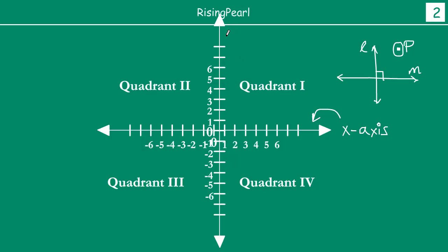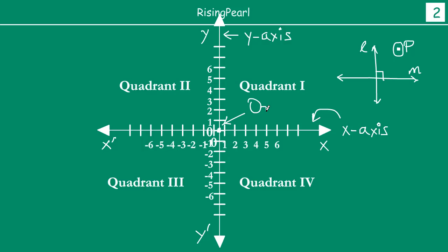And the other one we call the Y axis. Now, the X axis we also write as X X-dash — that is our naming convention. And the vertical axis we write as Y Y-dash. And where the X axis and Y axis intersect, this is our point of intersection. This point we call the Origin, and we represent it by the uppercase letter O.